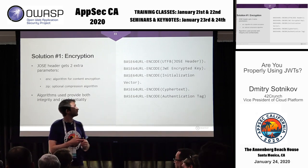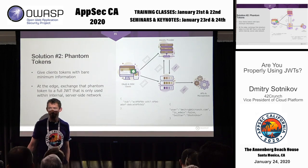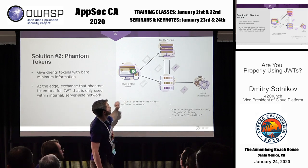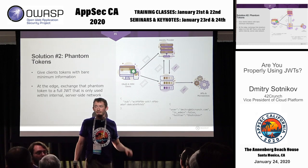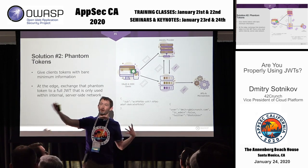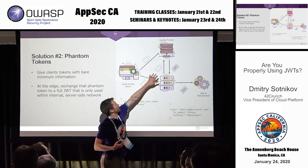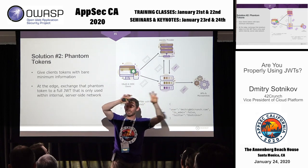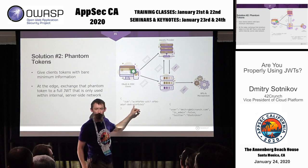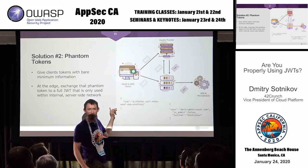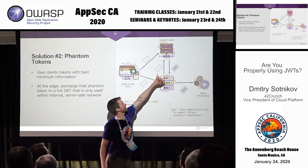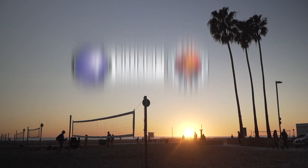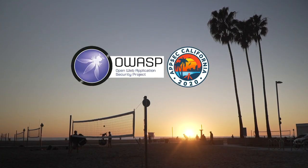[Q: For phantom tokens, how do the opaque tokens map to JWT tokens? Is there a standard mapping?] The mapping happens in the identity provider, but it's not a standard — it's an approach. The idea is: don't send the whole information, send some kind of identifier, and have your own code that maintains a mapping between that identifier and the full token. Use a temporary identifier, not a permanent one — so if it leaks, it's only good for five minutes or whatever the expiry is. But you maintain that mapping internally.